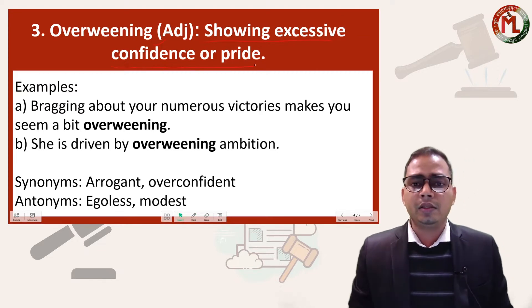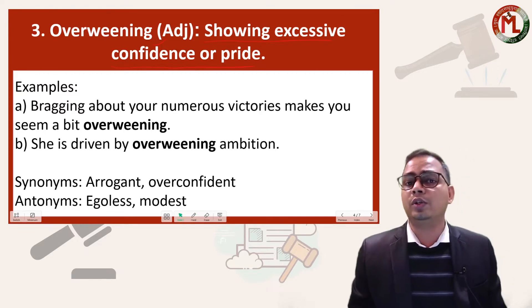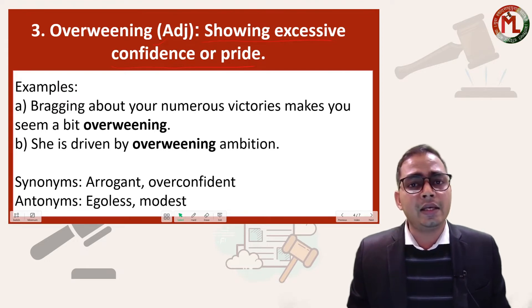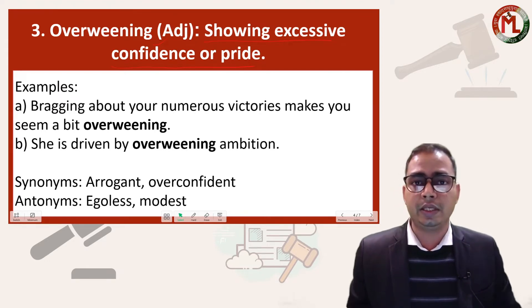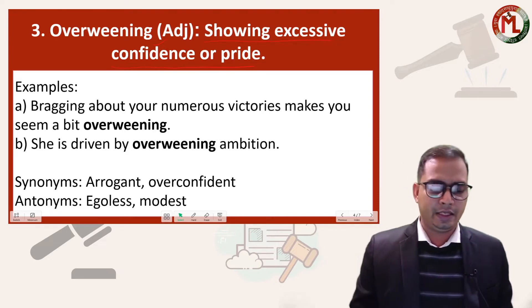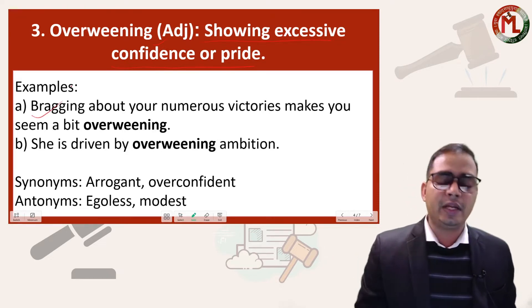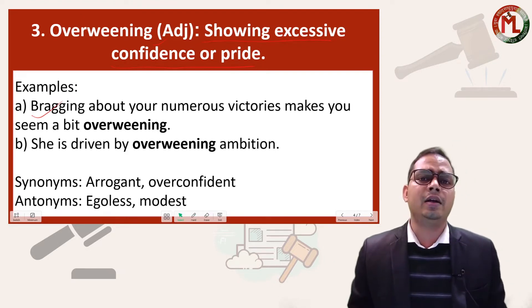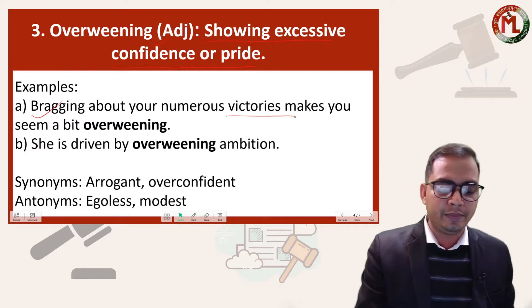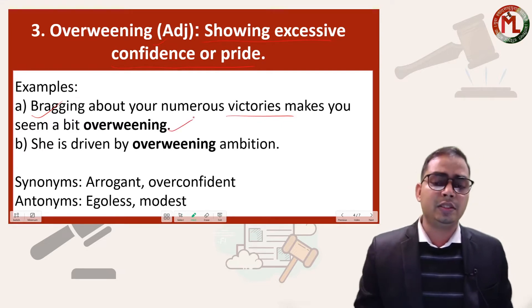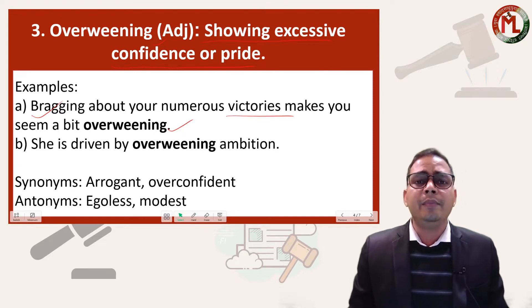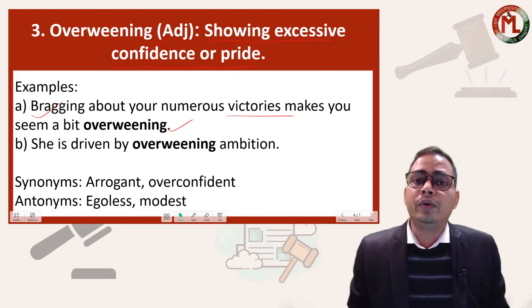In simple words, you can say 'overconfident.' Sometimes people show more confidence than necessary — in that context, that person may be called overweening. For example: 'Bragging about your numerous victories makes you seem a bit overweening' — that makes you look like an overweening person.